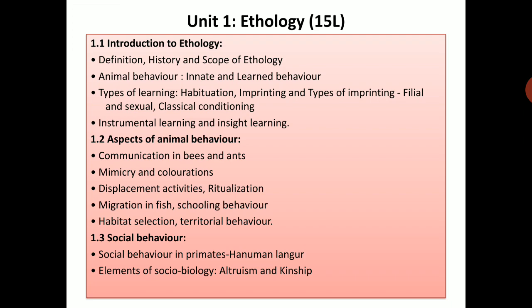Habitat selection is another behavior, as is territorial behavior. Here we are going to see about big animals like tigers, monkeys, orangutans and other big animals — how they select habitats or territories for their own survival. Then social behavior in primates like Hanuman langur, elements of social biology, altruism and kinship — these are some other kinds of behavior we are going to learn in Ethology.